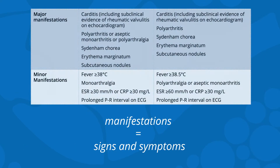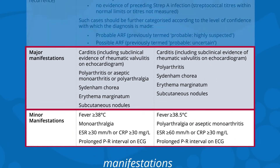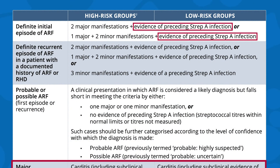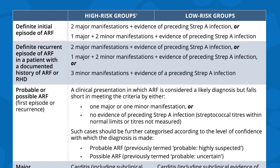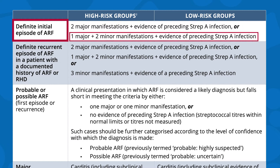There is no single test for ARF. Therefore, a combination of major and minor clinical manifestations with supporting laboratory evidence of a preceding Strep A infection are required for diagnosis. For a first episode of definite ARF, a person must have two major manifestations plus evidence of a Strep A infection, or one major and two minor manifestations plus evidence of a Strep A infection.